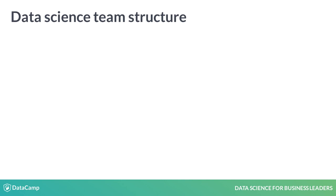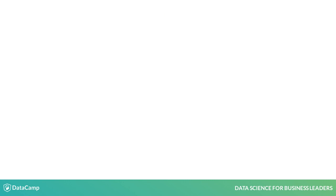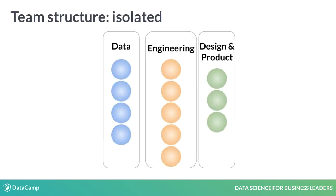Once you've hired some data professionals, there are three main ways you can structure your data team: isolated, embedded, or hybrid. An isolated data team can contain one or multiple types of data employees without any other teams like engineering or product. This is a great structure for training new team members and quickly changing which project each member is working on.